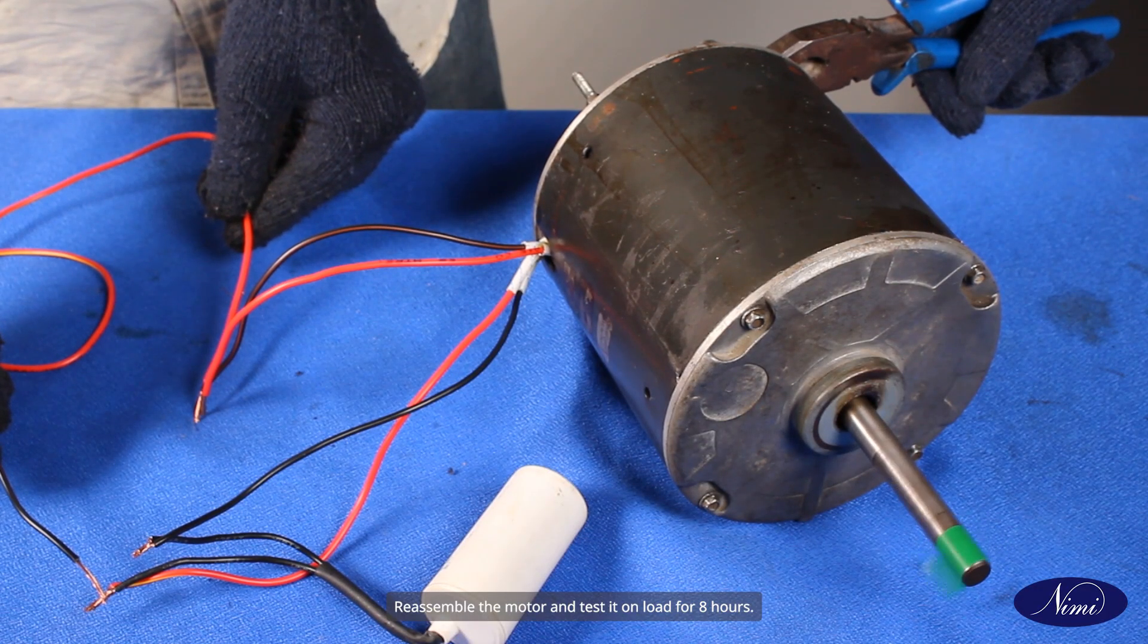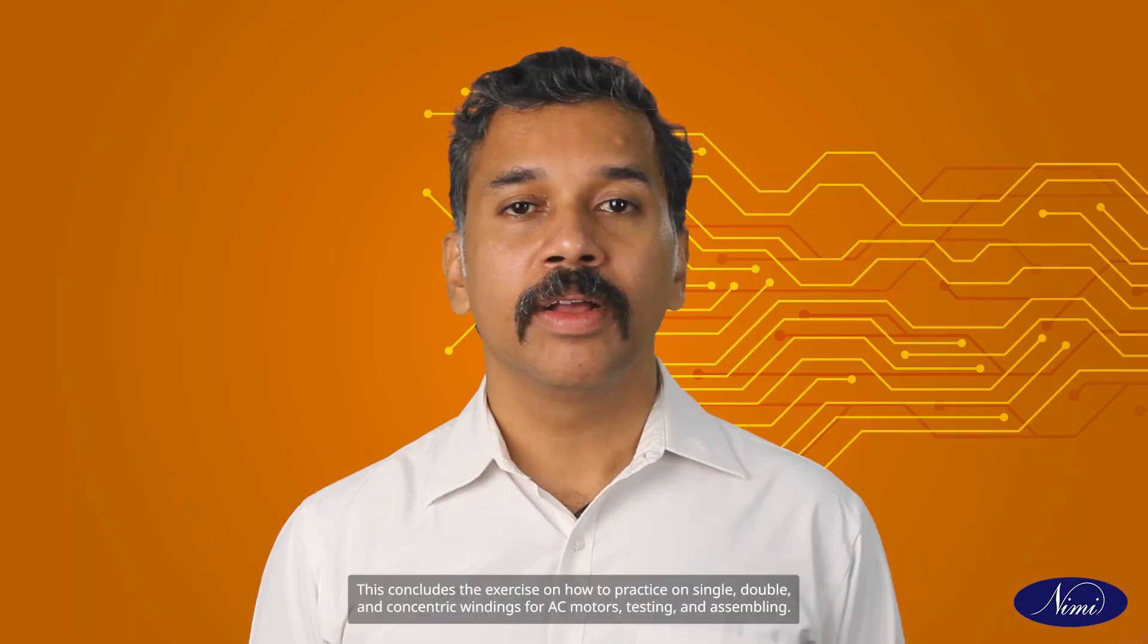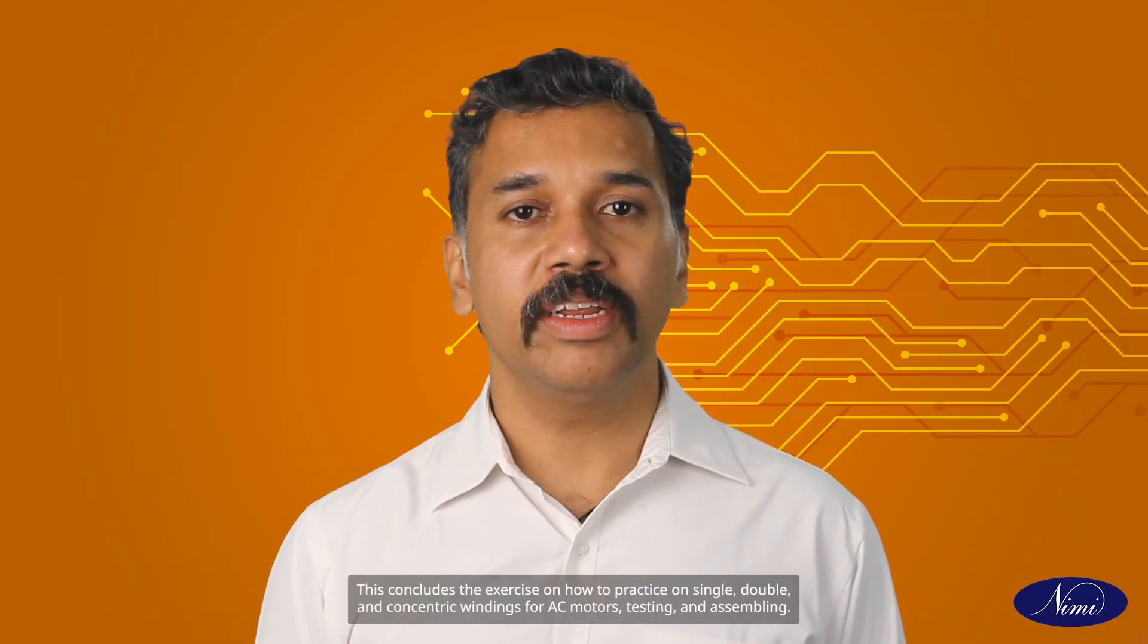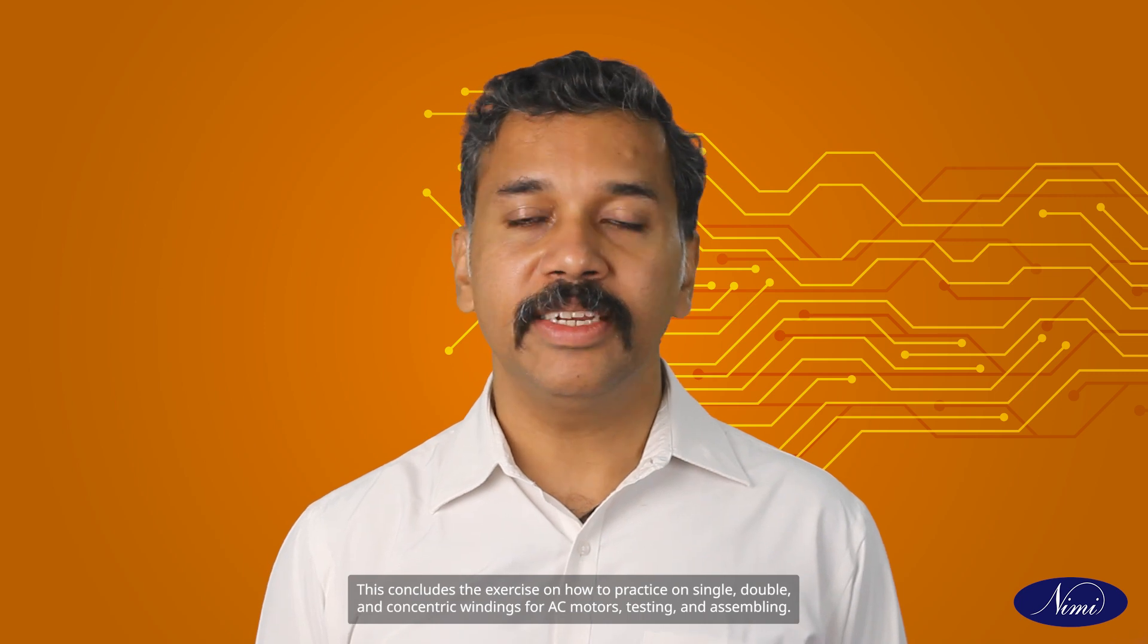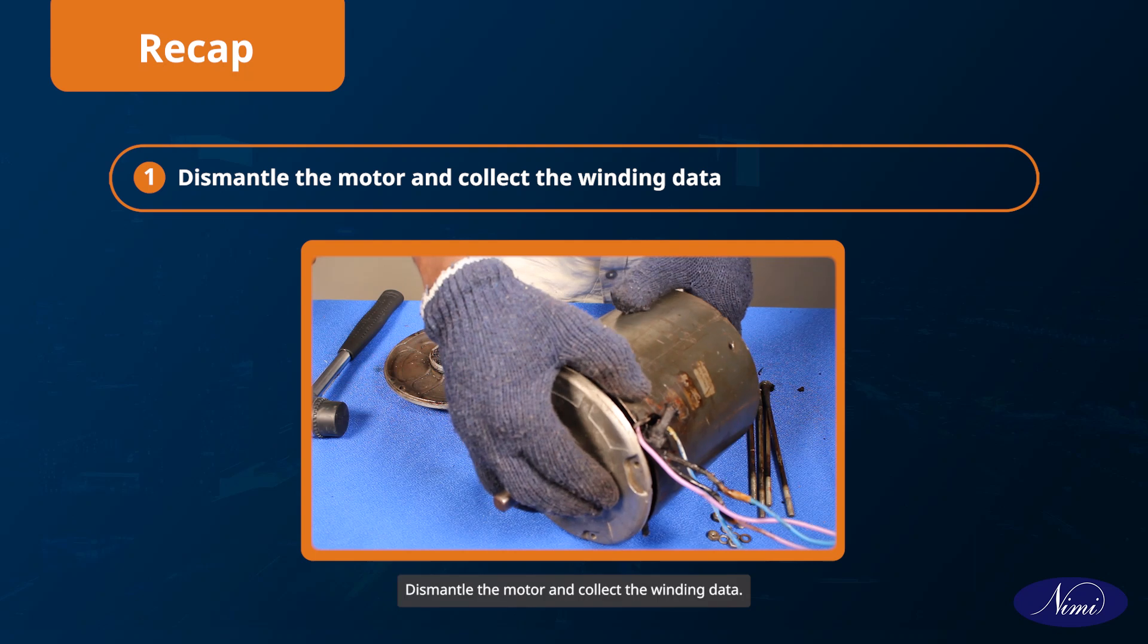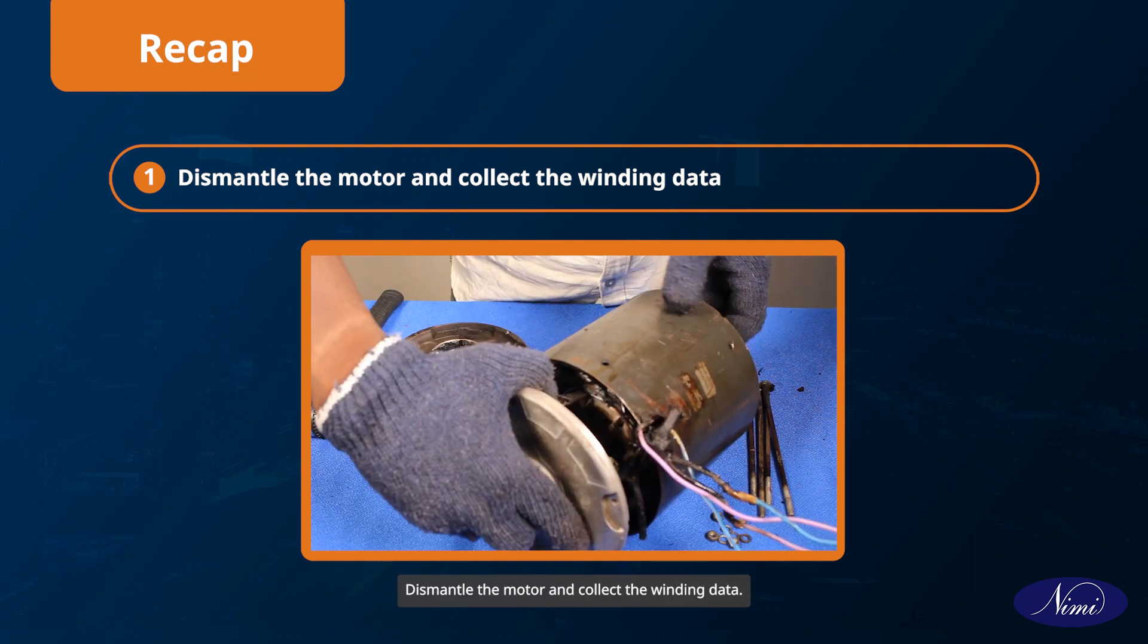Reassemble the motor and test it on load for 8 hours. This concludes the exercise on how to practice on single, double, and concentric windings for AC motors testing and assembling. Hope now you will be able to dismantle the motor and collect the winding data.